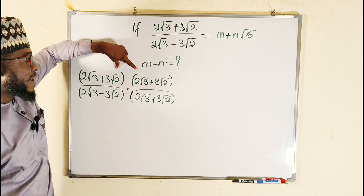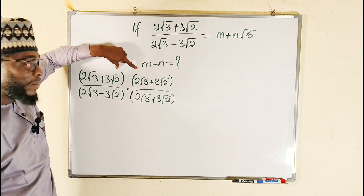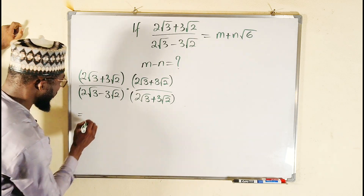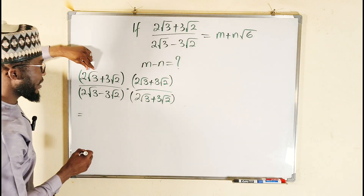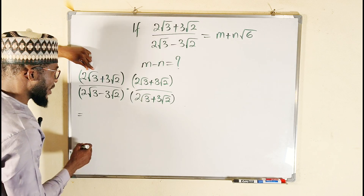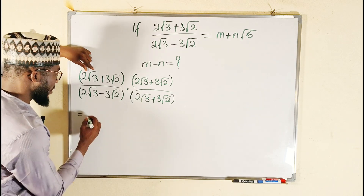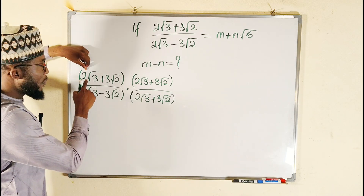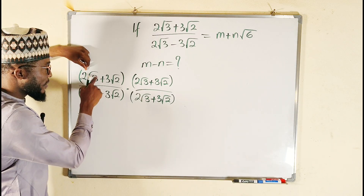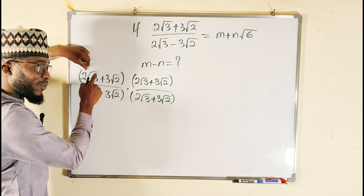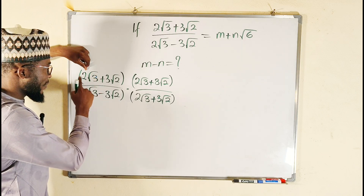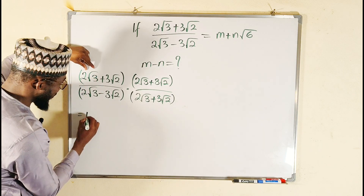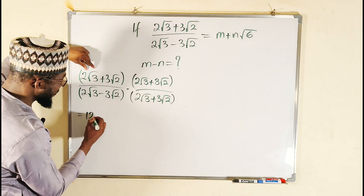If you observe, these are exactly the same thing, so the numerator is the first term squared. 2 squared is 4, and √3 squared is 3, so 4 times 3 is 12. The whole of this first term squared is 12.